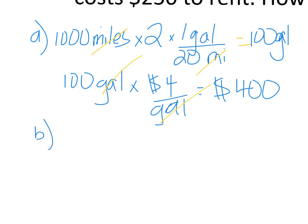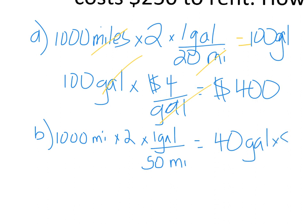Okay, Peter thinks that renting a more fuel-efficient car might be better. The rental gets 50 miles per gallon and costs $250 to rent. How much would the total round trip cost, including the rental? All right, so let's find out the price of gas with the rental. So we start out with the same problem: 1000 miles times 2 for round trip times 1 gallon over 50 miles now. And we're going to end up using only 40 gallons of gas instead of 100.